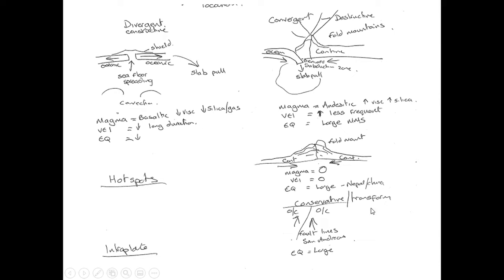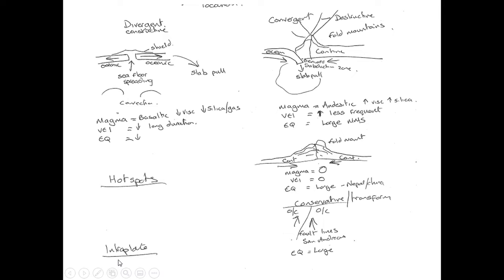At conservative or transform plate boundaries, we can have oceanic or continental plates. As they move alongside each other at different speeds, they cause fault lines such as the San Andreas Fault in California, which can lead to large earthquakes. It's also important to understand the formation of volcanoes around hotspots, where mantle plumes underneath the Earth's crust form large magma chambers, and as the plates move over them we get chains of volcanic islands such as Hawaii. There are also intraplate earthquakes, which may be caused by old fault lines no longer on plate boundaries, or due to underlying geology or old cave and mine systems.